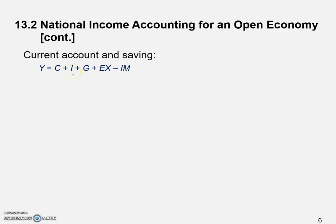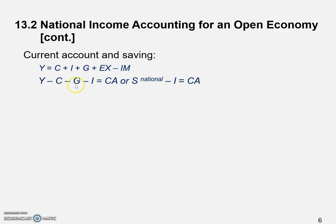This is the expenditure approach — we're looking at who purchases the output. It could be domestic consumers, investors, businesses, governments, and foreign consumers (exports). We subtract imports because we also spend money on imported goods and services, which are not domestically made. So we have to subtract them from total expenditure to get national output. Now we want to rewrite this national income account identity.